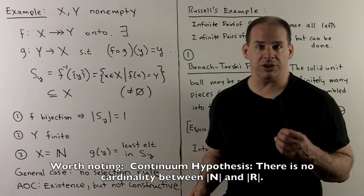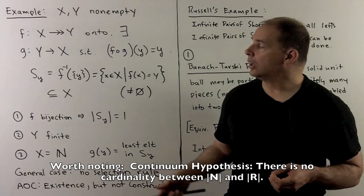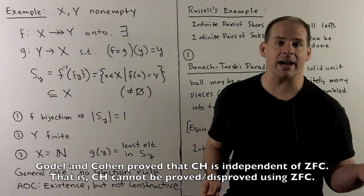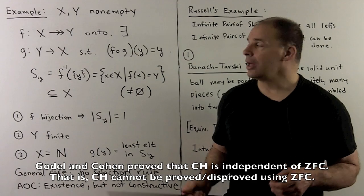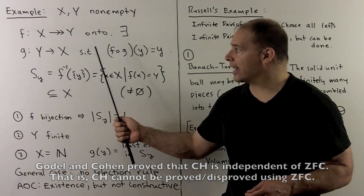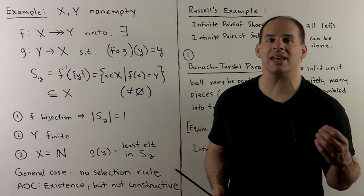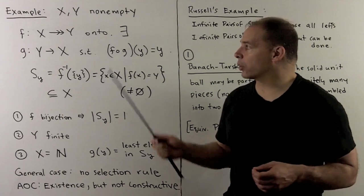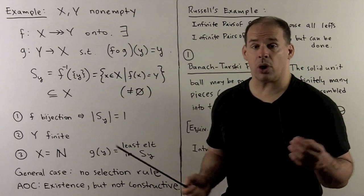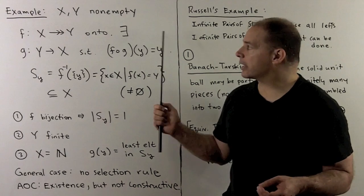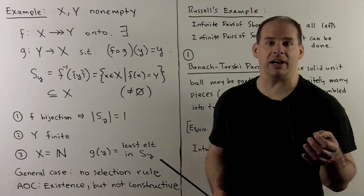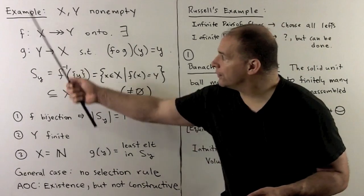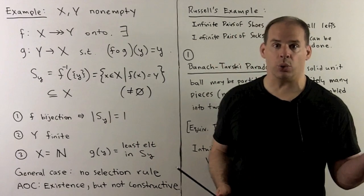Here's a familiar application of the axiom of choice. We have X and Y non-empty sets, and F is a map carrying X onto Y. Then there exists a G carrying Y to X such that F composed with G is the identity map on Y. The first part is another way to define an equivalence relation, an onto map. The second part, we're just guaranteeing we can pick representatives for each equivalence class.